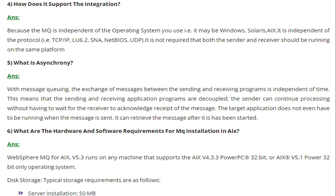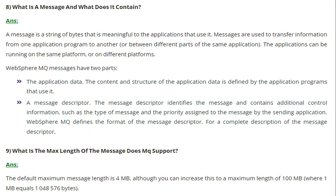What are the hardware and software requirements? The requirements are minimal — you can have a 32-bit or 64-bit operating system, and the server installation requires about 50 MB. What does a message contain? It contains the application data and the message descriptor. A message is a string of bytes that is meaningful to the application — messages are used to transfer information from one application program to another, or between different parts of the same application, whether running on the same or different platforms.